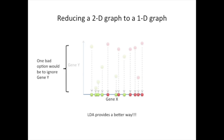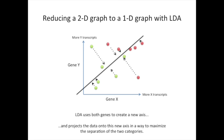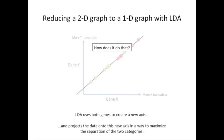LDA provides a better way. Here we're going to try to reduce this two-dimensional graph to a 1D graph using LDA. LDA uses the information from both genes to create a new axis, and it projects the data onto this new axis in a way to maximize the separation of the two categories. So the general concept here is that LDA creates a new axis, and it projects the data onto that new axis in a way that maximizes the separation of the two categories. Now let's look at the nitty-gritty details and figure out how LDA does that.